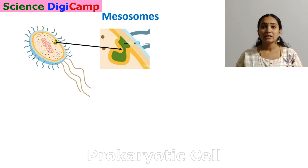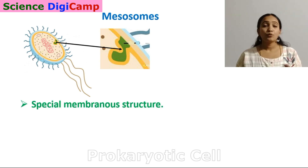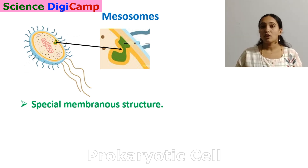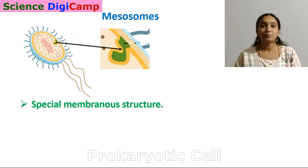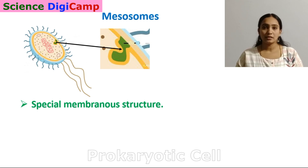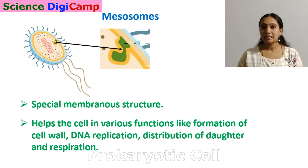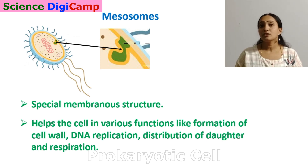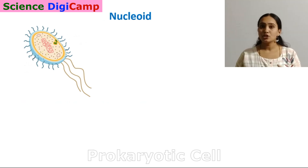Moving on to mesosomes. In some prokaryotes, the plasma membrane folds inward to form structures known as mesosomes — special membranous extensions from the plasma membrane, usually in the form of tubules or vesicles. Mesosomes help the cell in various functions like cell wall formation, DNA replication, distribution to daughter cells, and even respiration. They also help the plasma membrane increase its surface area.